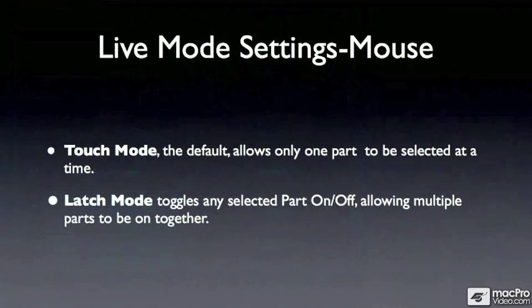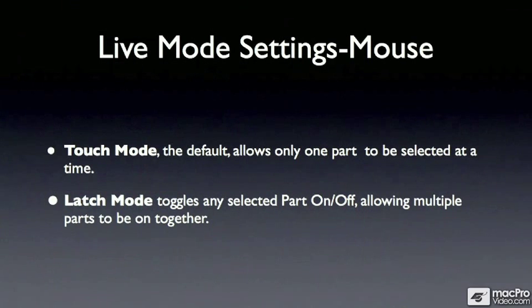In touch mode, only one part at a time can be selected or active. In latch mode, each part is toggled independently, and multiple parts can be active together.